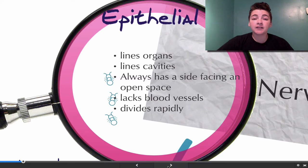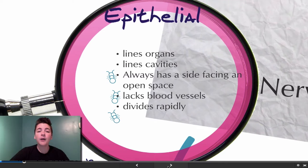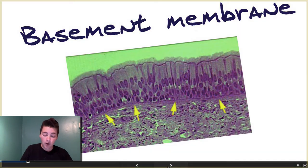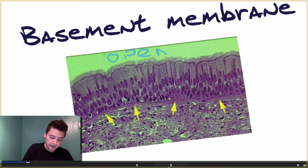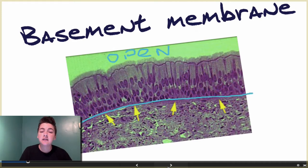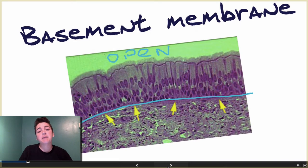Epithelial lacks blood vessels and it divides rapidly. When we look at epithelial, one thing we always want to do is find the open space and then find what we call the basement membrane. The basement membrane is the membrane between the epithelial tissue and the tissue below — it is the distinct line between the epithelial and the tissue below. If you can find the open space and the basement membrane, it'll be easier to tell what type of tissue you are looking at.